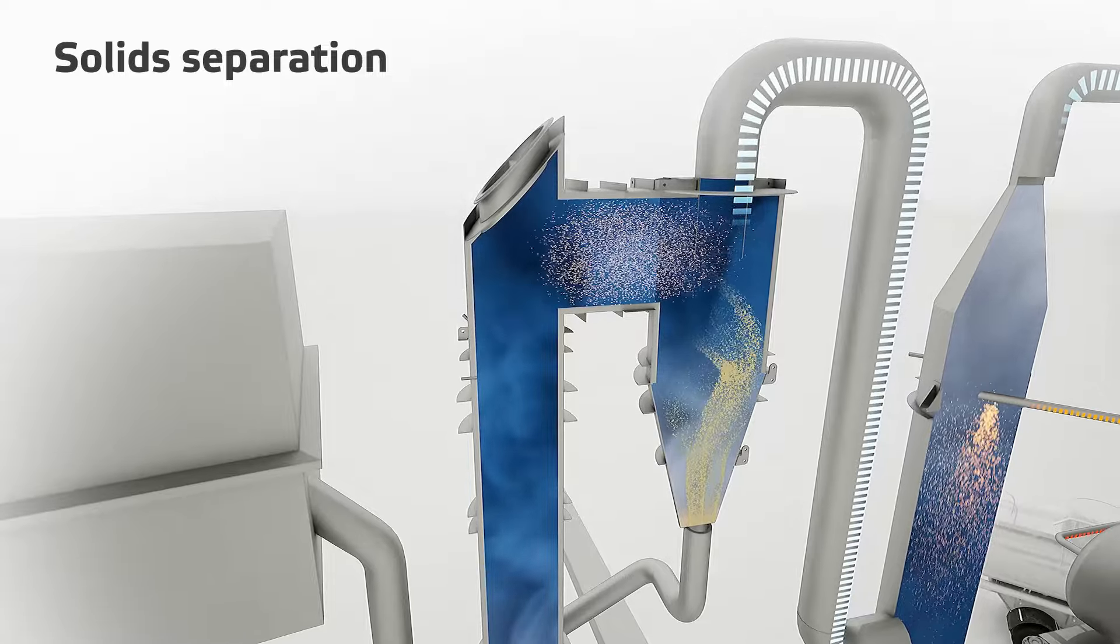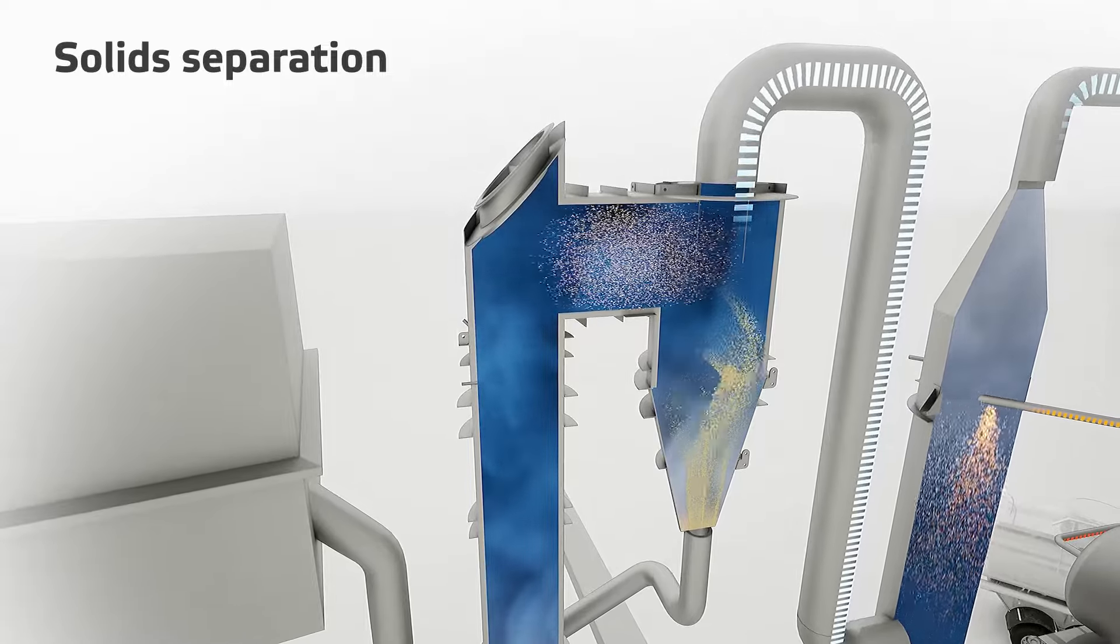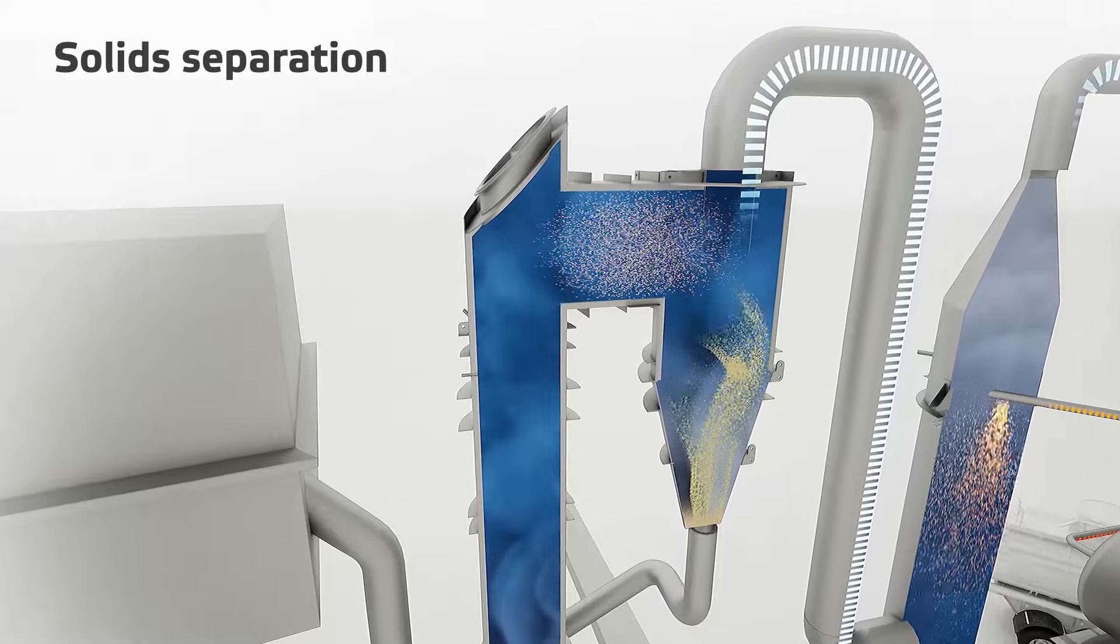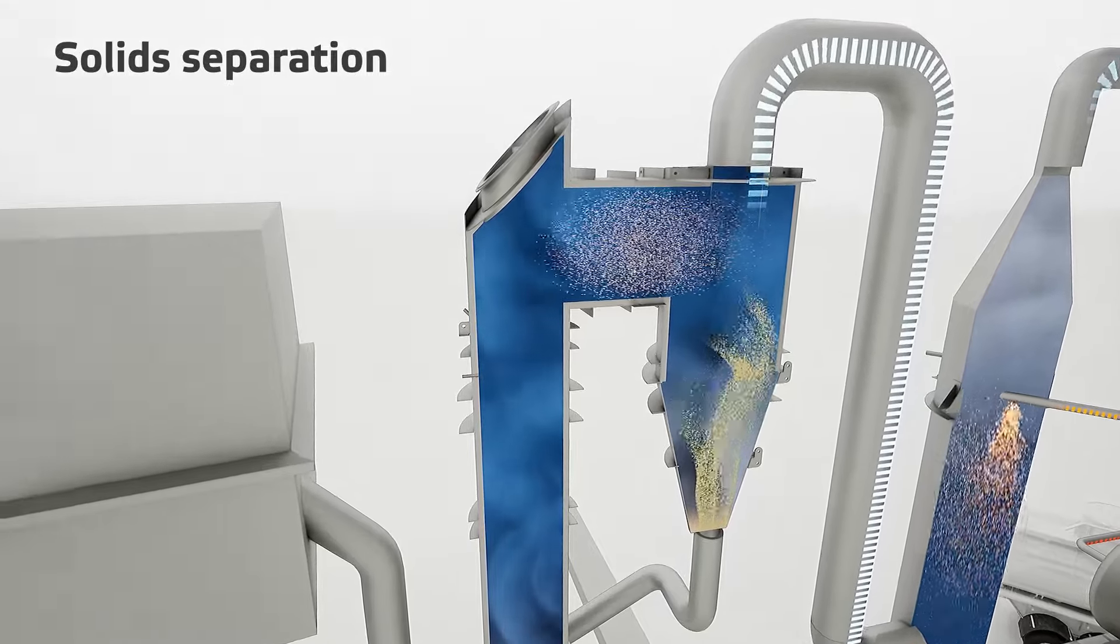The sand is returned to the CFB boiler. The biochar can be either separated from the process or used as fuel for the CFB boiler when no additional energy is needed for the pyrolysis process.